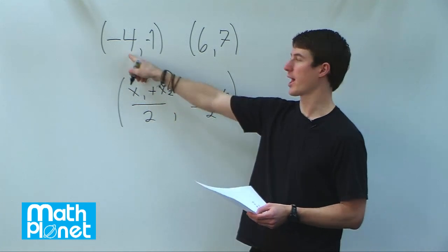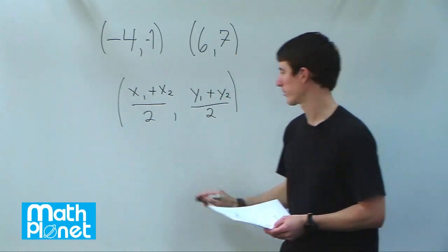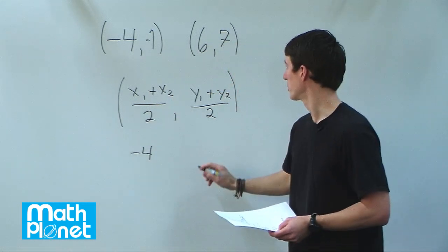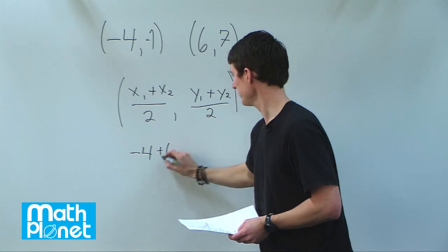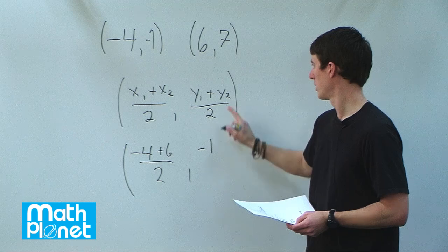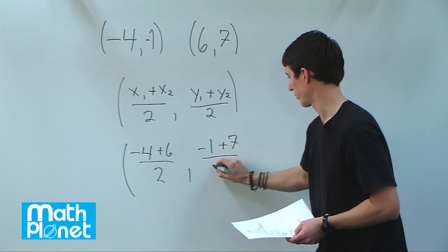So we just find the x1, the x2, the y1, and the y2, and then we can find it from there. So x1 is negative 4, x2 is 6, over 2. y1 is negative 1, y2 is positive 7, over 2.